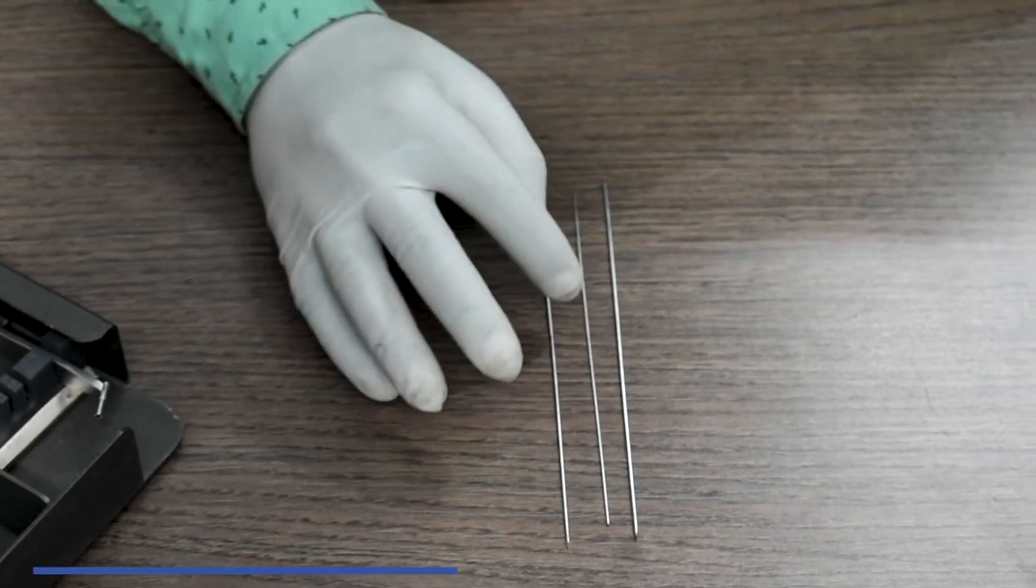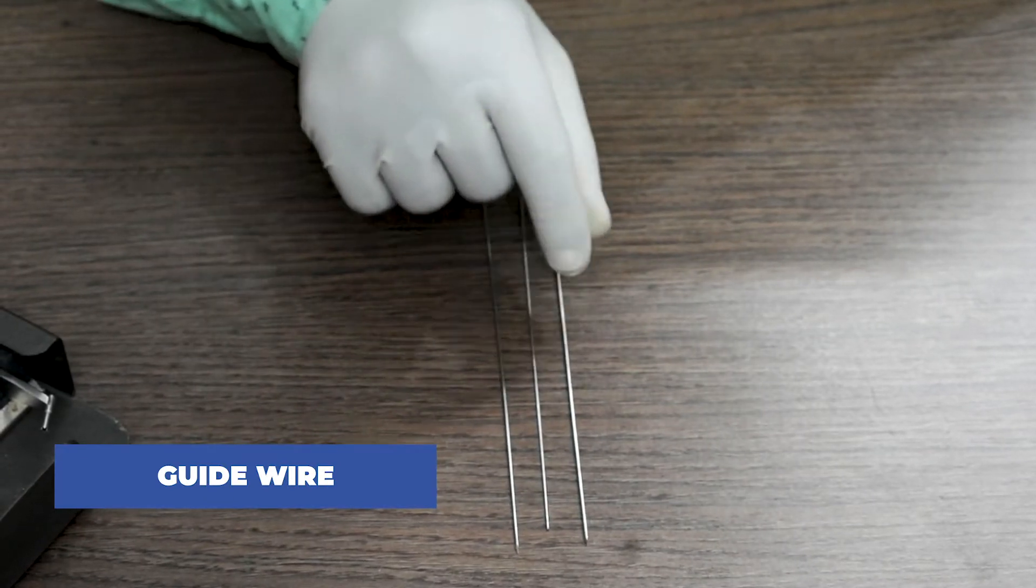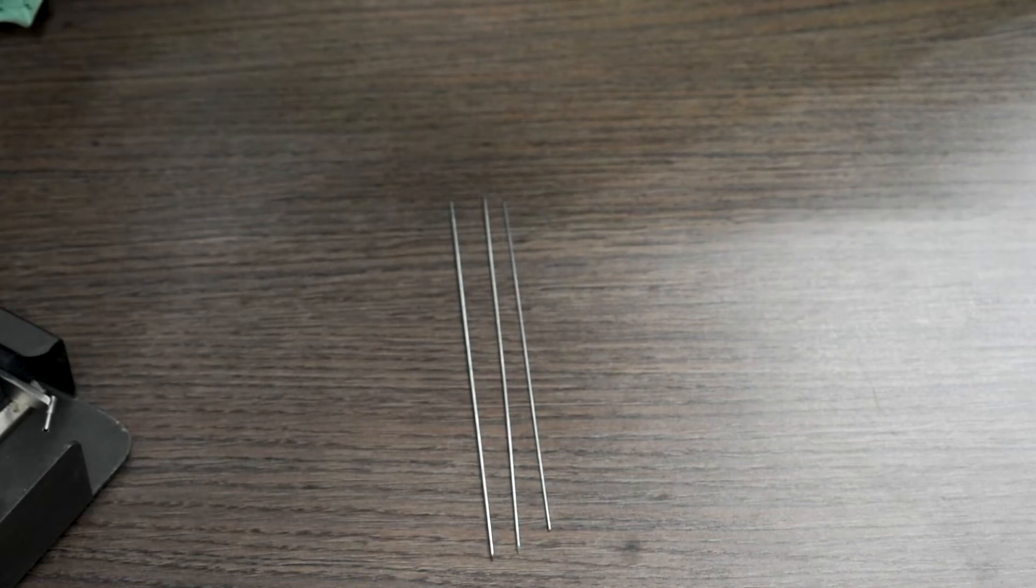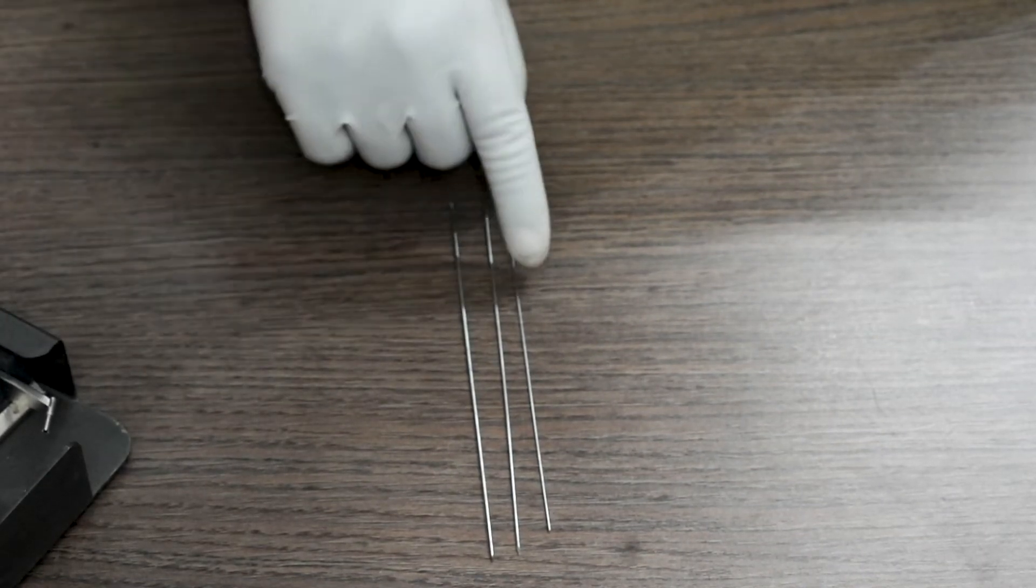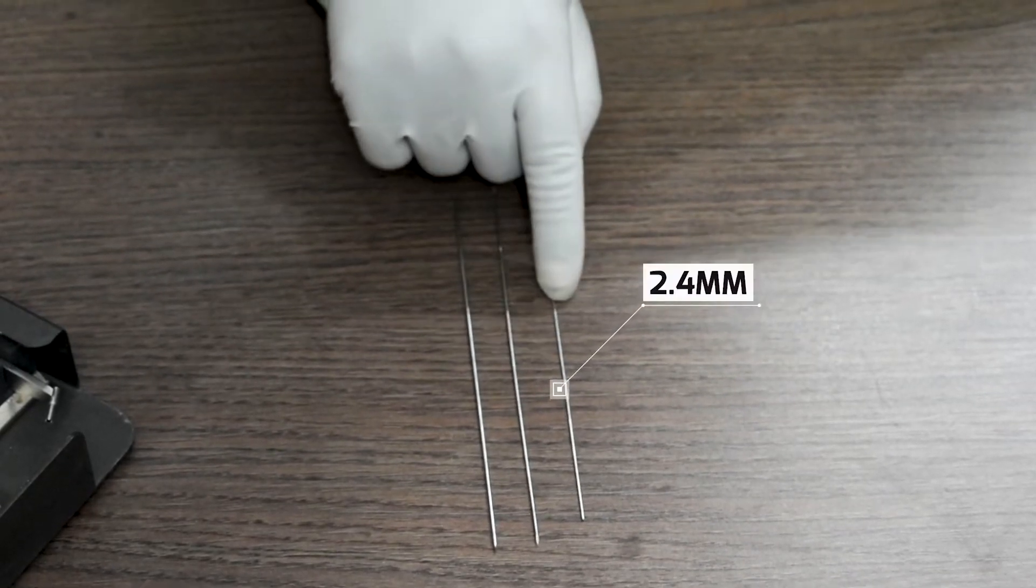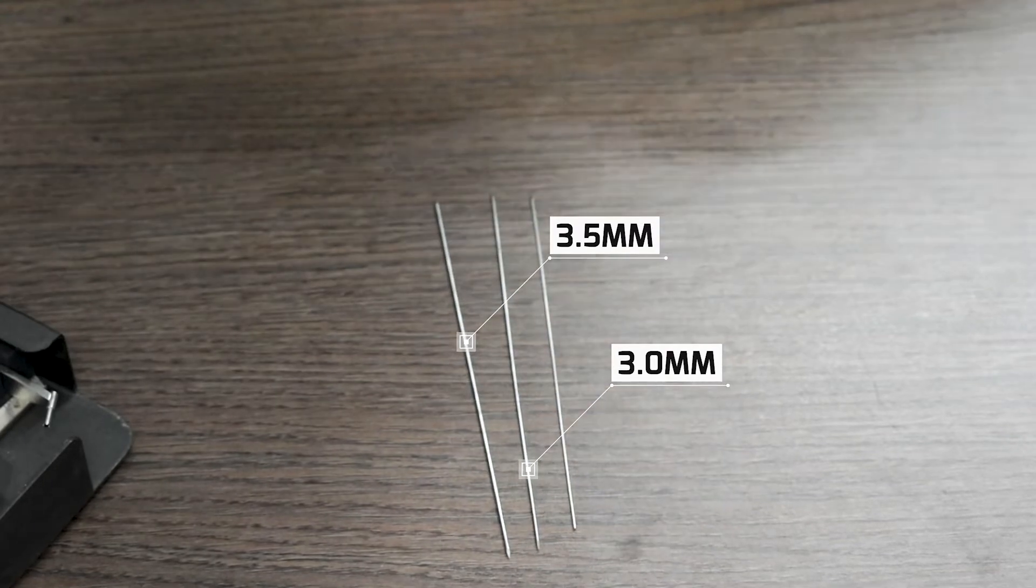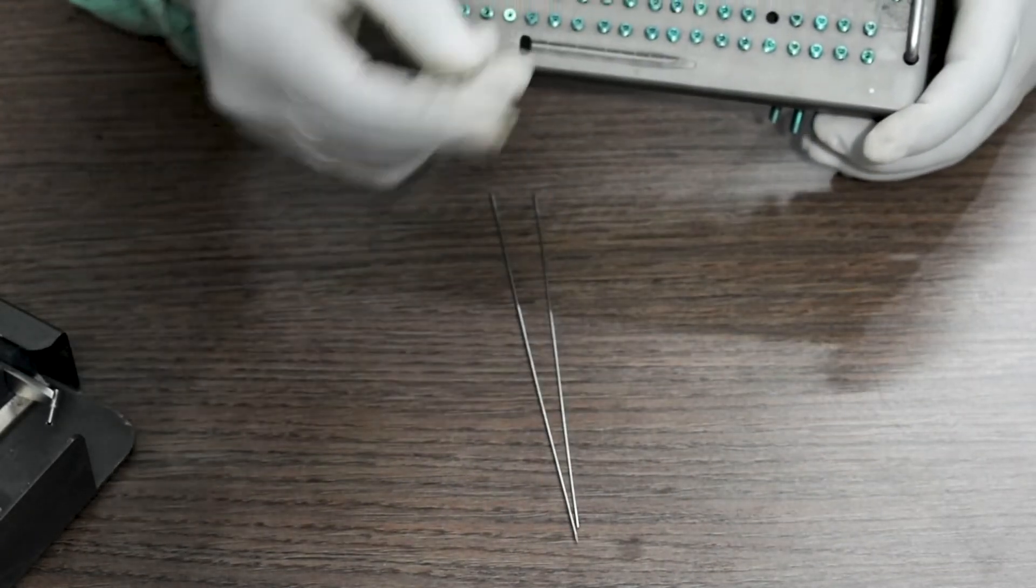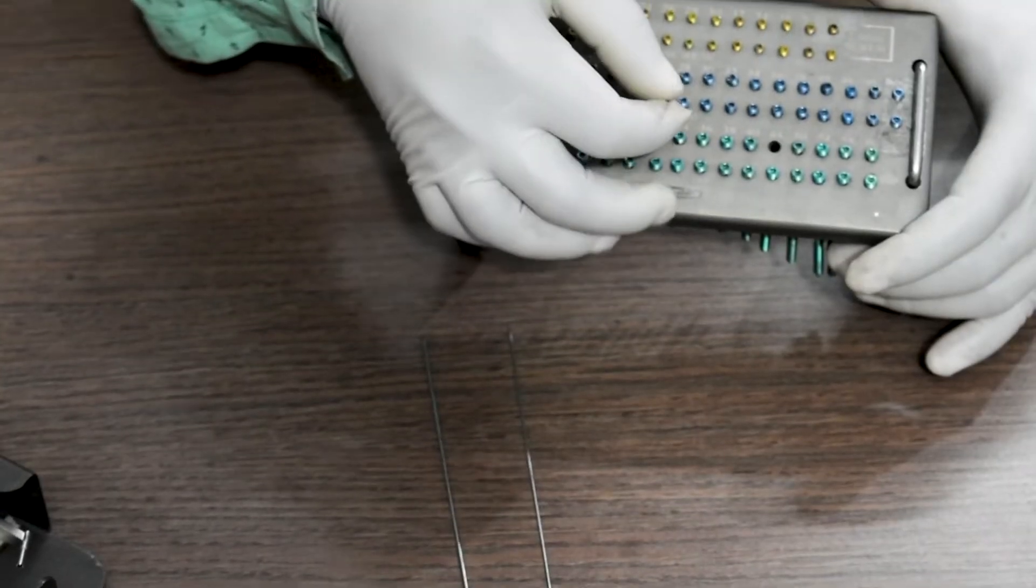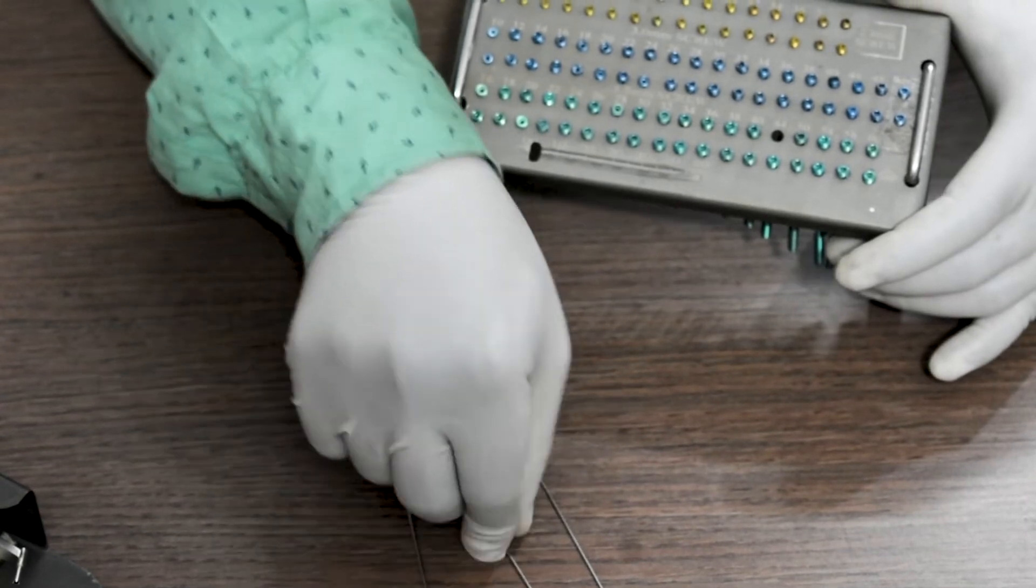Coming down to the guide wires required, these are called guide wires available in different diameters. This one is 2.4mm, this one is 3mm, and this one 3.5mm. These guide wires are used to direct the Special Herbert Screw in the fracture site.